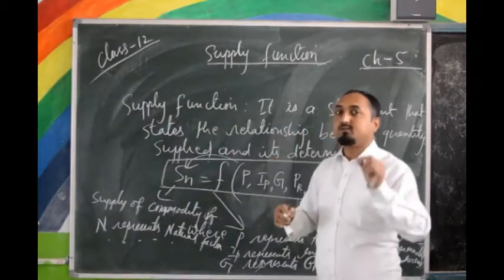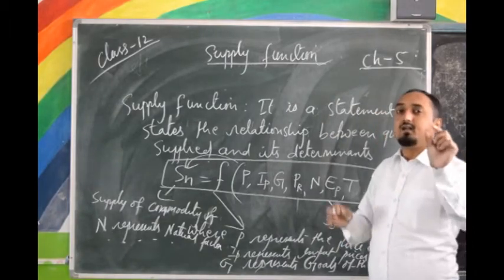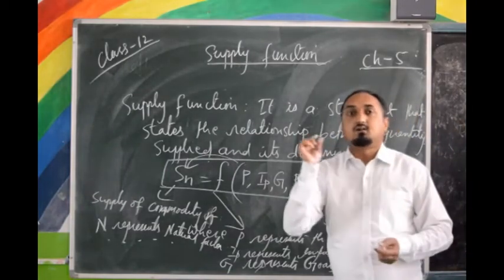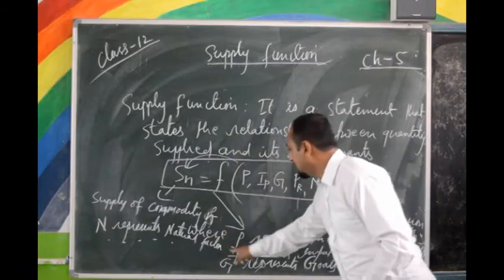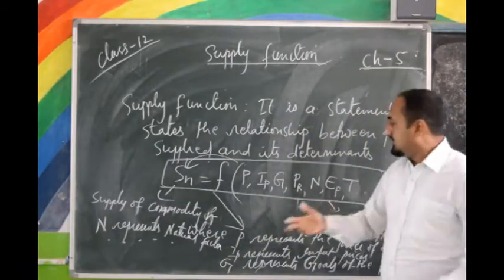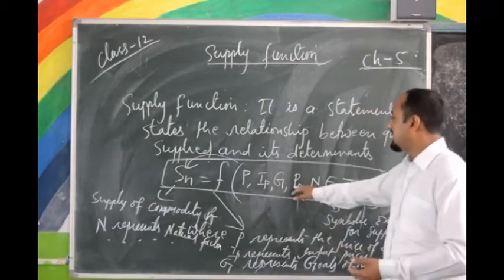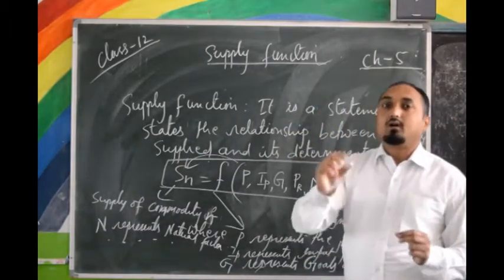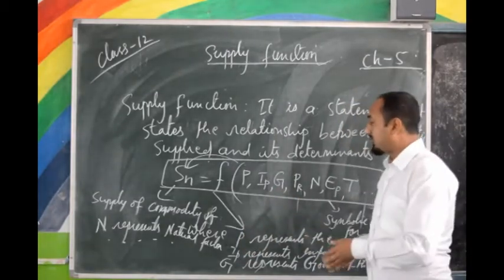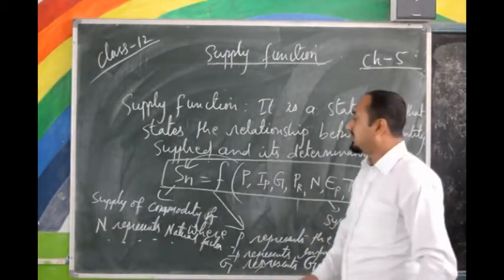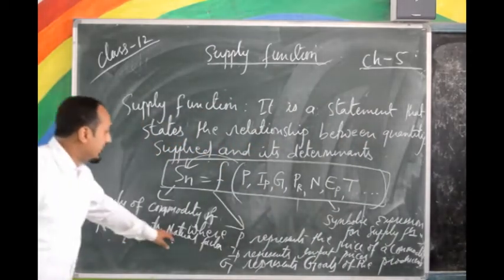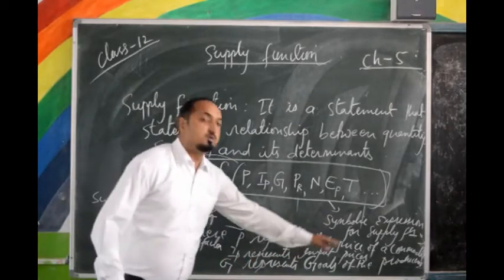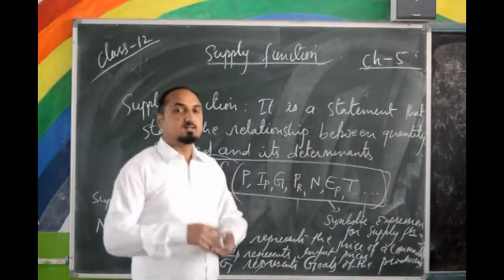If you go through your textbook, you may notice that the symbols used for the different factors may vary. But whatever symbol you are using, you have to write what each represents — for example, N represents natural factor, G represents goals of the producers, IP represents input price. In this way you can explain the supply function.